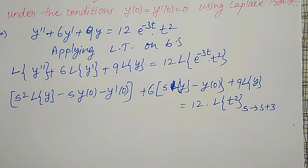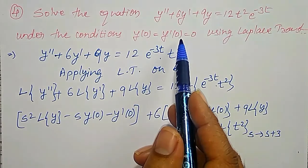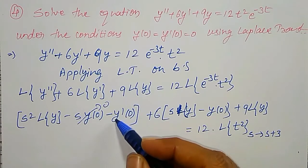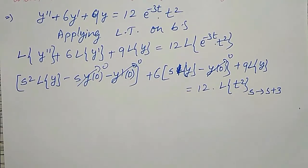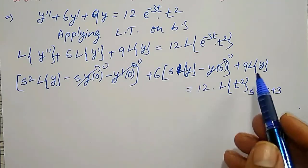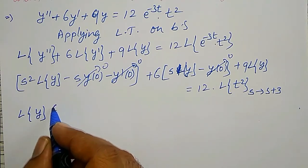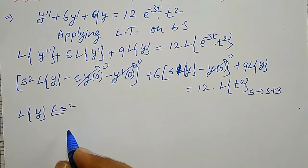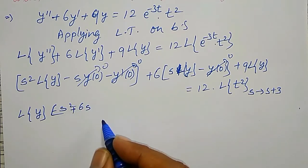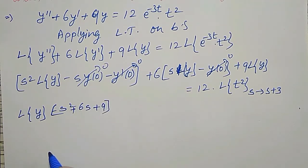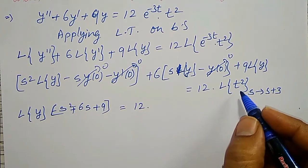Simplifying and substituting the initial conditions y(0) = 0 and y'(0) = 0, those terms become zero. Taking L{y} common, I get L{y} times the bracket s squared plus 6s plus 9, equal to 12 times L{t²}.